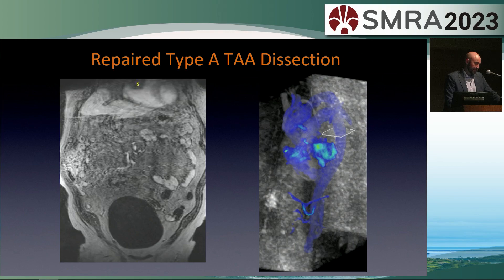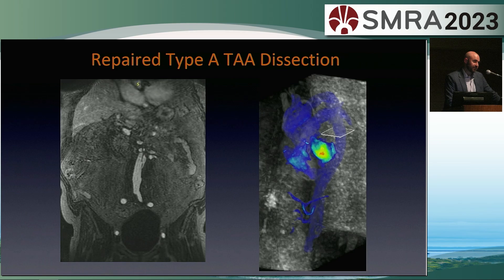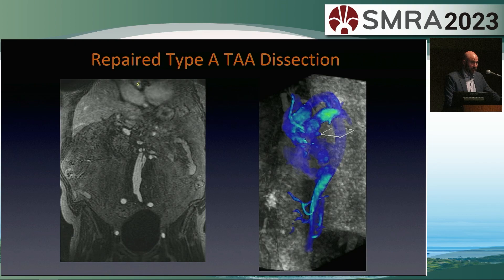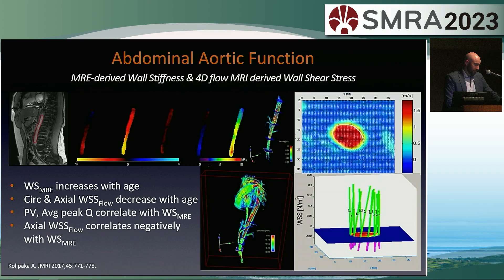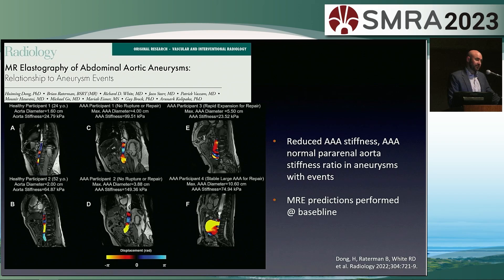Dissections are really well assessed with contrast-enhanced MR angiography, though we don't typically see these referred primarily for MR — they tend to be done with CT. Coupled with 4D-flow imaging, we can get a great sense of function and understand flow within the true and false lumina, which may be an interesting marker for progression. Studies have looked at MRE-derived wall stiffness and its link to aneurysm progression, with a recent paper highlighting differences in aneurysm stiffness between patients who progress versus those who don't with abdominal aortic aneurysm.